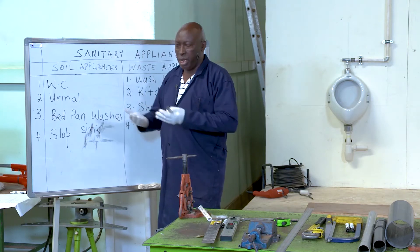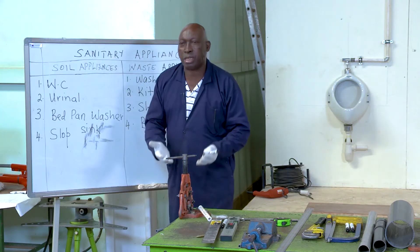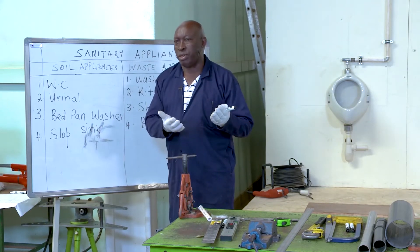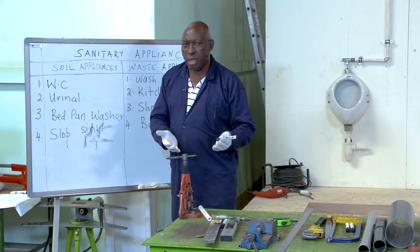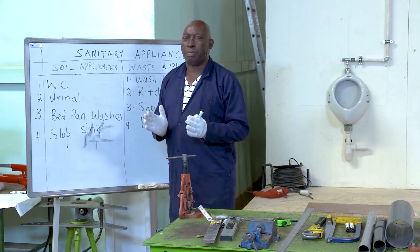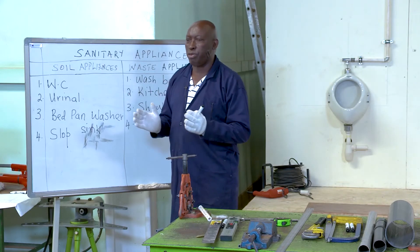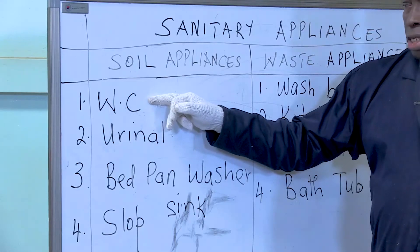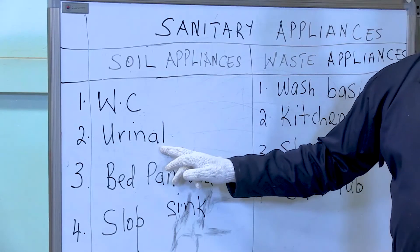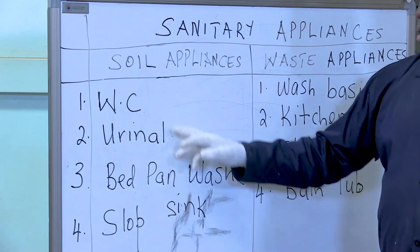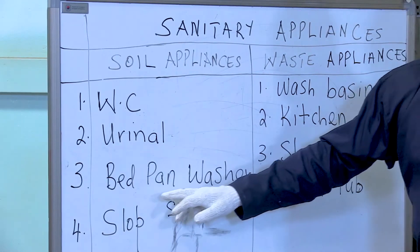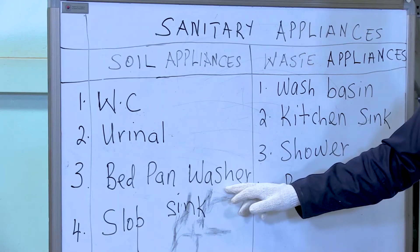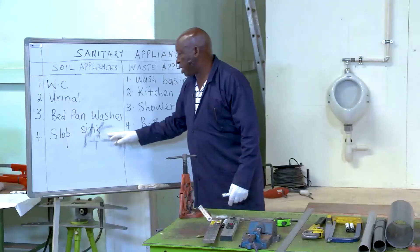Soil appliances are those appliances that receive and dispose of waste from human beings, disposing of the waste through a system of pipework — that is, above-ground drainage. Among the soil appliances, we have the water closet (WC), we have the urinal which we have already installed, and we have the bedpan washer and slop sink.